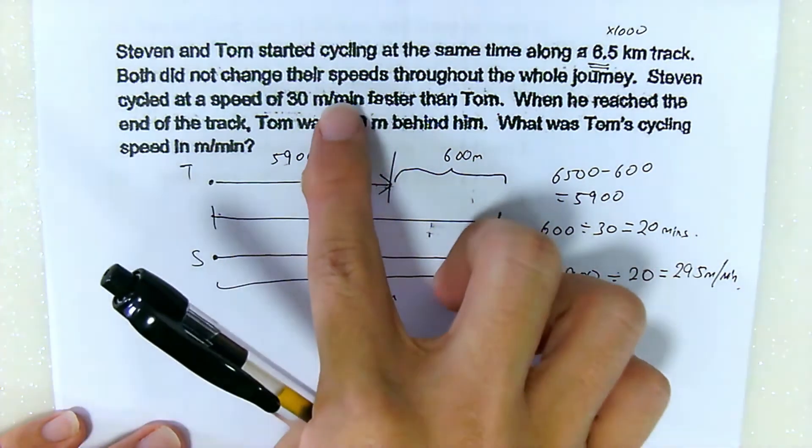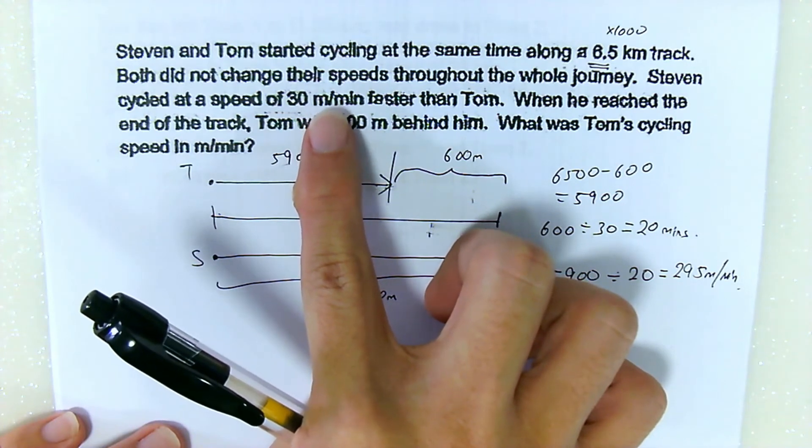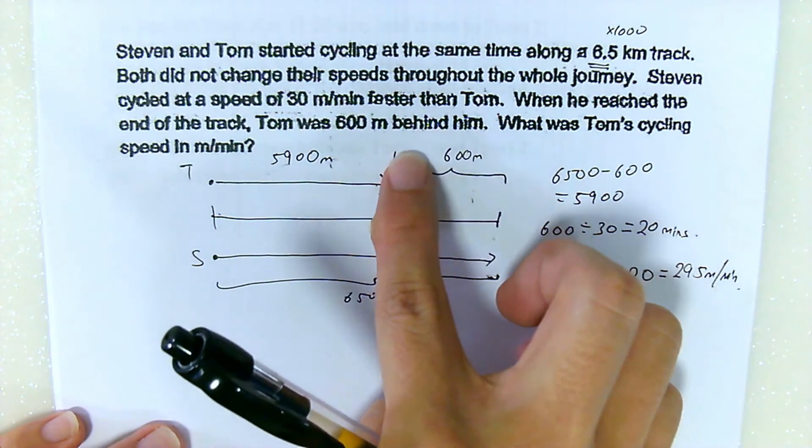Steven traveled 30 meters per minute more than Tom. In every single minute, he will be 30 meters ahead. So for him to be 600 meters ahead, you take 600 divided by 30 meters to be 20 minutes.